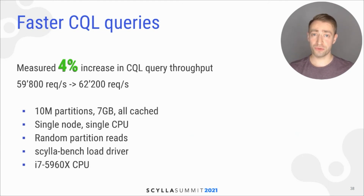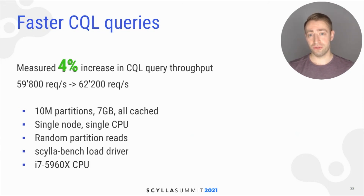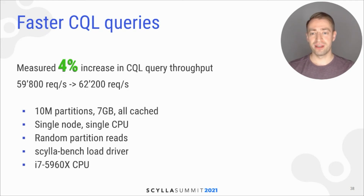This translates to faster CQL queries. For example, in a workload with 10 million partitions where everything is cached, we saw an increase of 4% in CQL throughput.